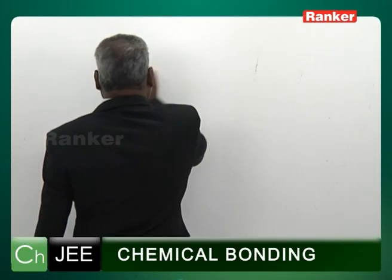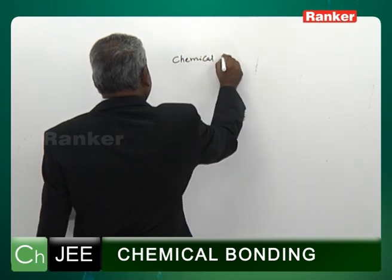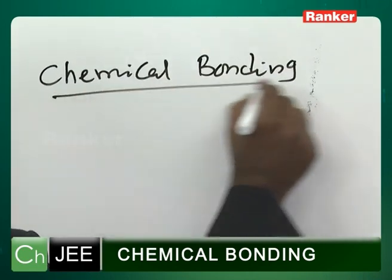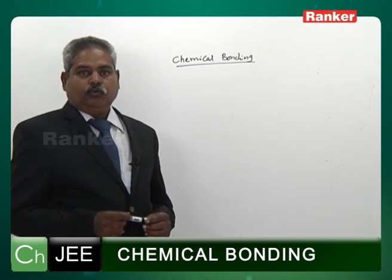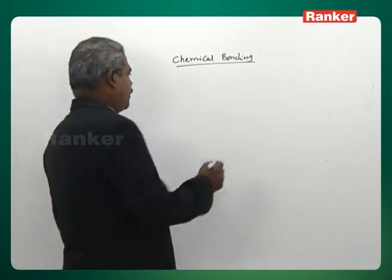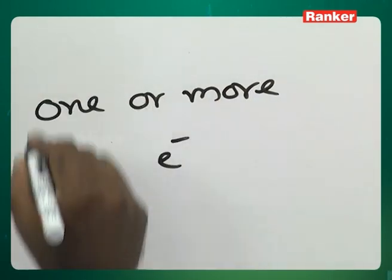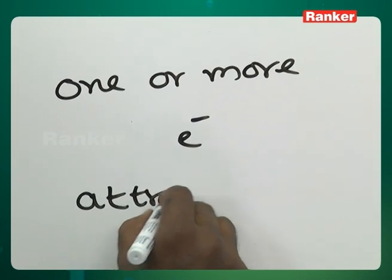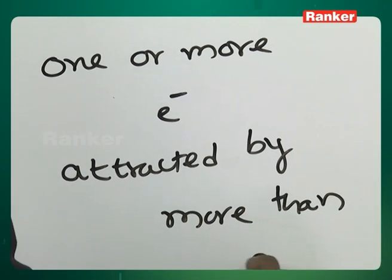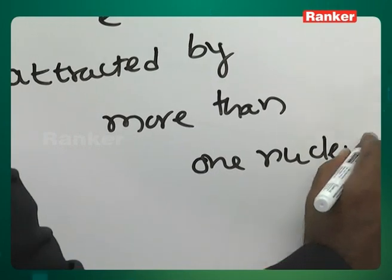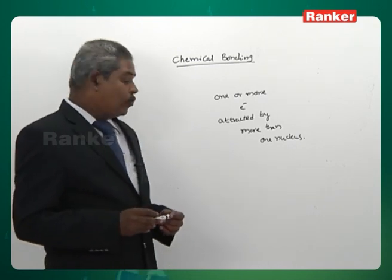Let us discuss chemical bonding. What do you mean by a chemical bond? One or more electrons attracted by more than one nucleus. Try to understand this definition: one or more electrons attracted by more than one nucleus.